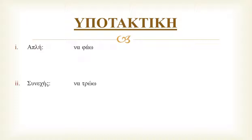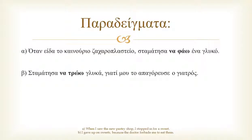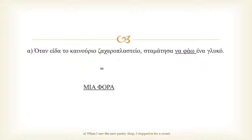We pass on to the subjunctive. We have two different examples here. In the first example, we are using the simple subjunctive form, να φάω, because eating happens once, at one particular time — when I saw the pastry shop.